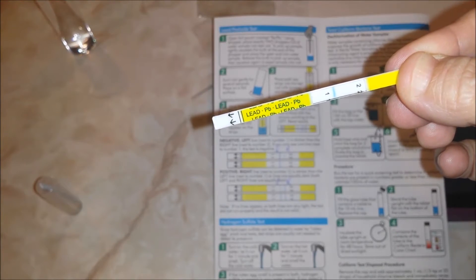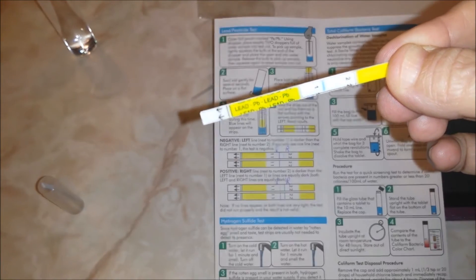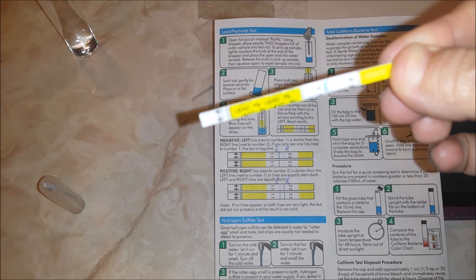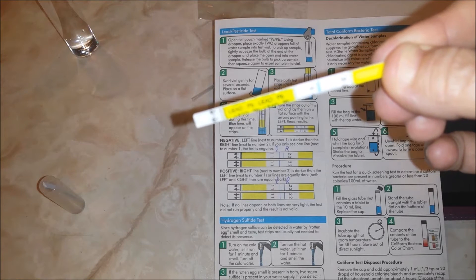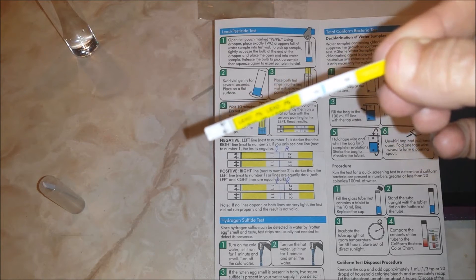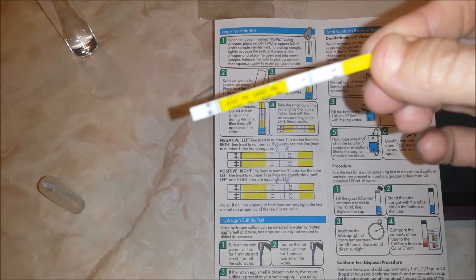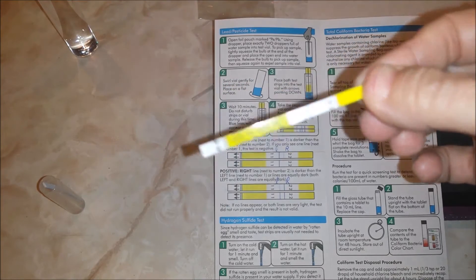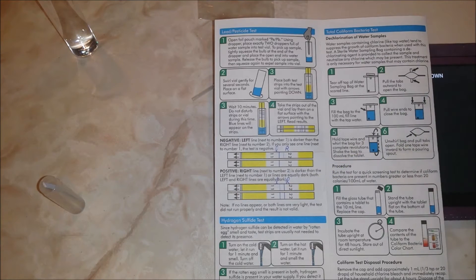If the line toward the one is darker than the right line next to the number two, or if you only see one line, it's negative. And if it's the reverse, if the line toward the two is darker, it's positive. So lead is negative.